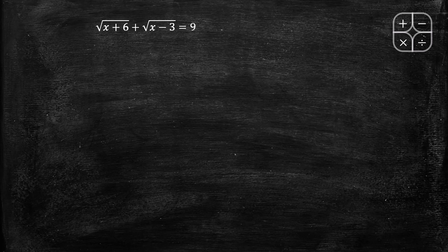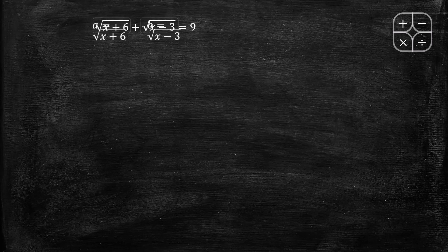Square root of x plus 6, plus square root of x minus 3, equals 9. We need to find x. Following the method, square root of x plus 6 plus square root of x minus 3 equals 9.